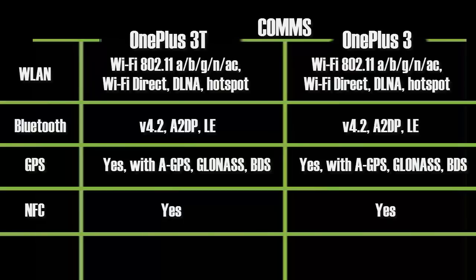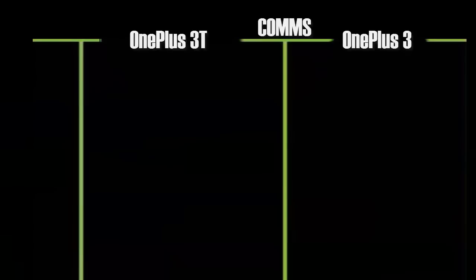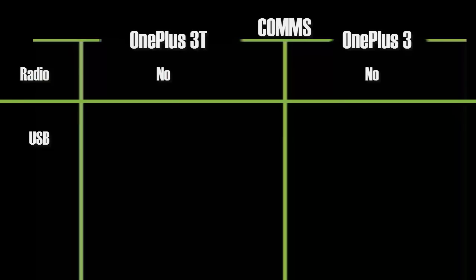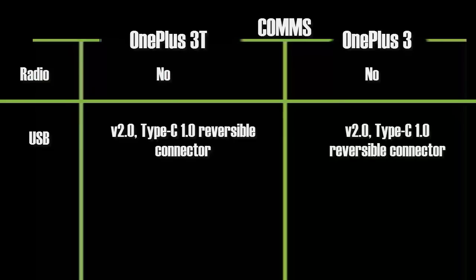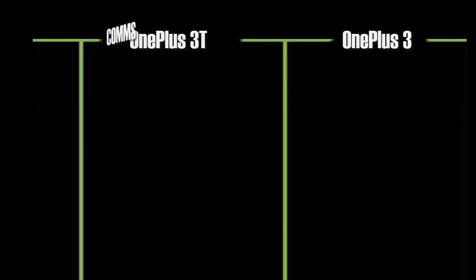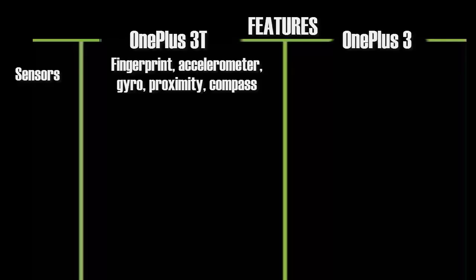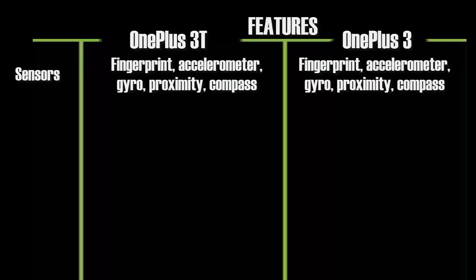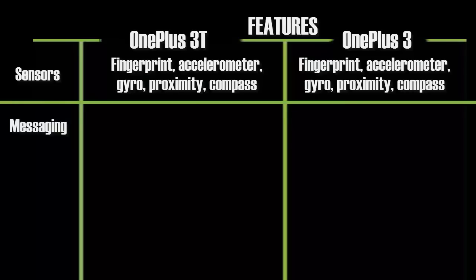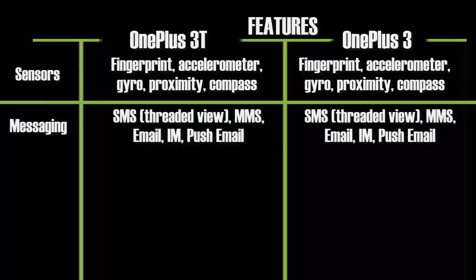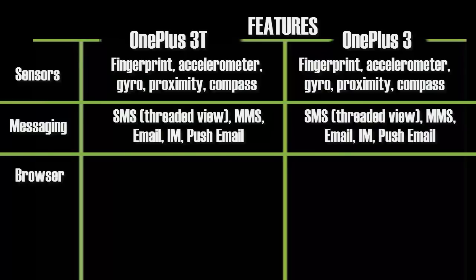Both phones come with USB 2.0 Type-C. Talking about sensors, both phones have a fingerprint sensor, accelerometer, gyroscope, proximity sensor, and compass. Both phones also support dash charging, meaning you can charge your phone to 60% within just 30 minutes.